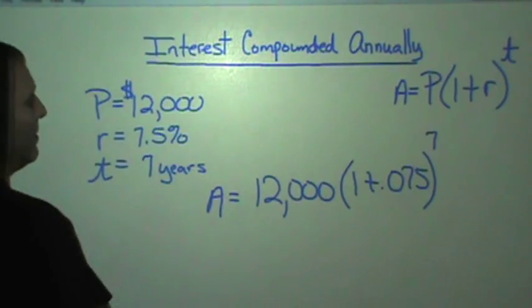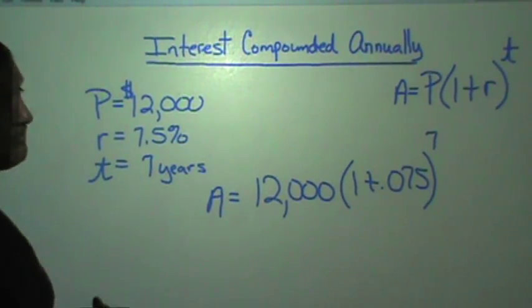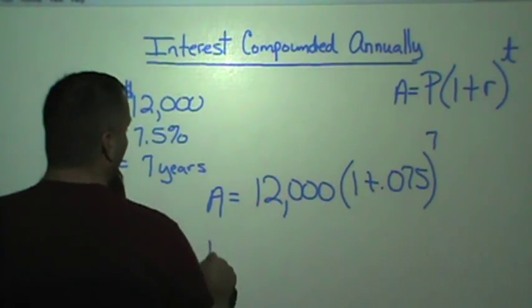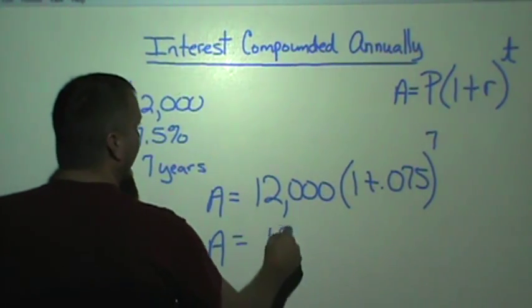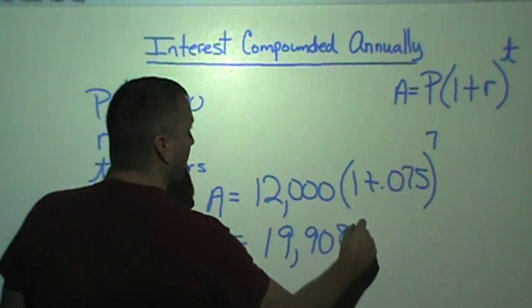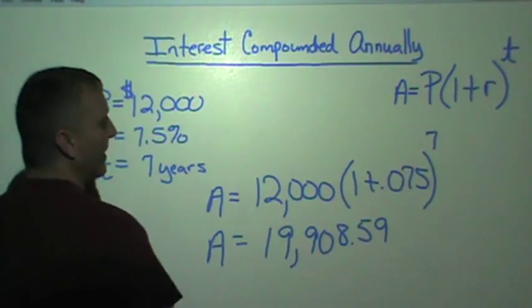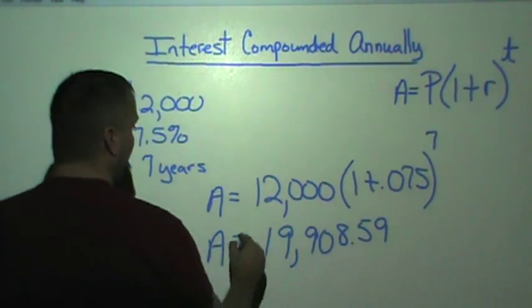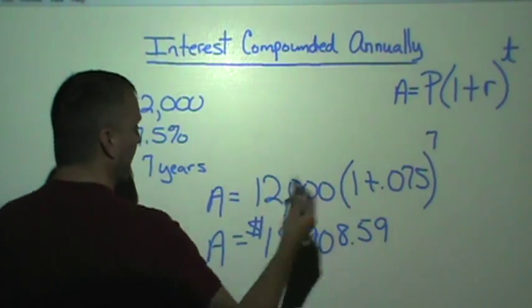You can put this in the calculator. You can pretty much push in or you get the answer. The amount that you would make here is $19,959. This is the amount that you would have accumulated after seven years.